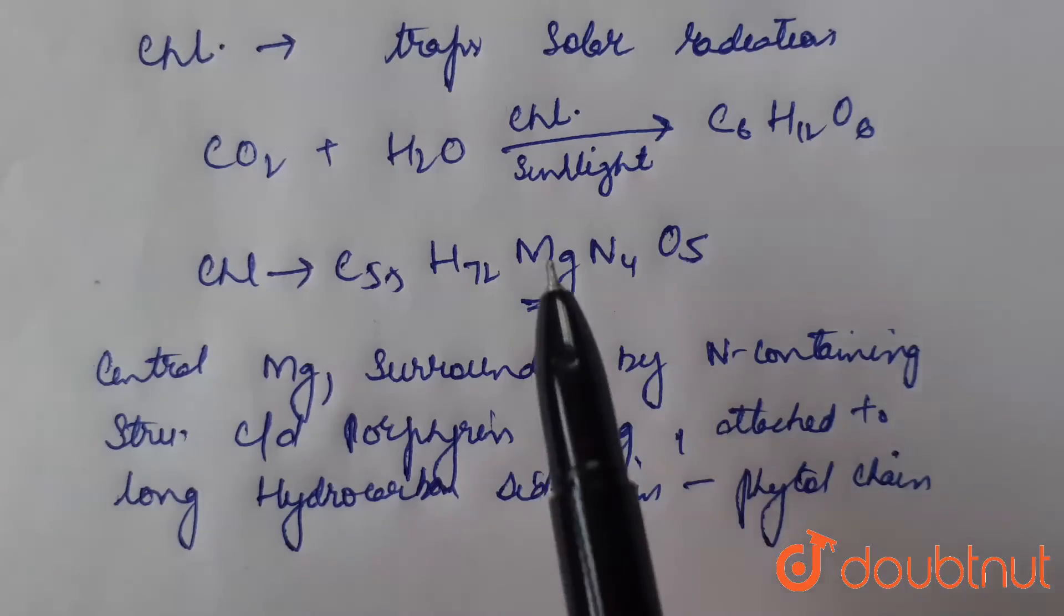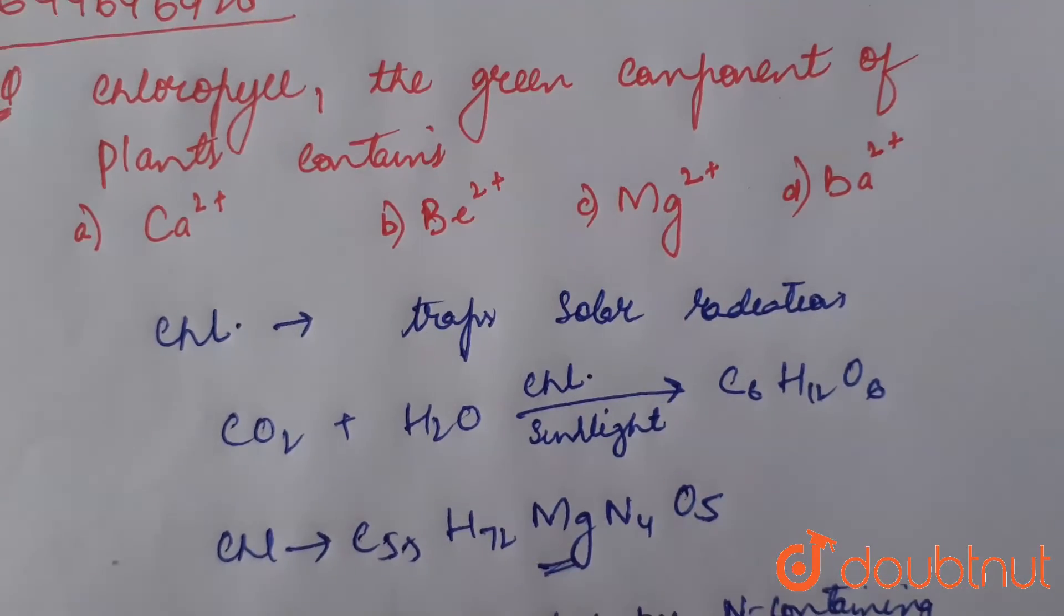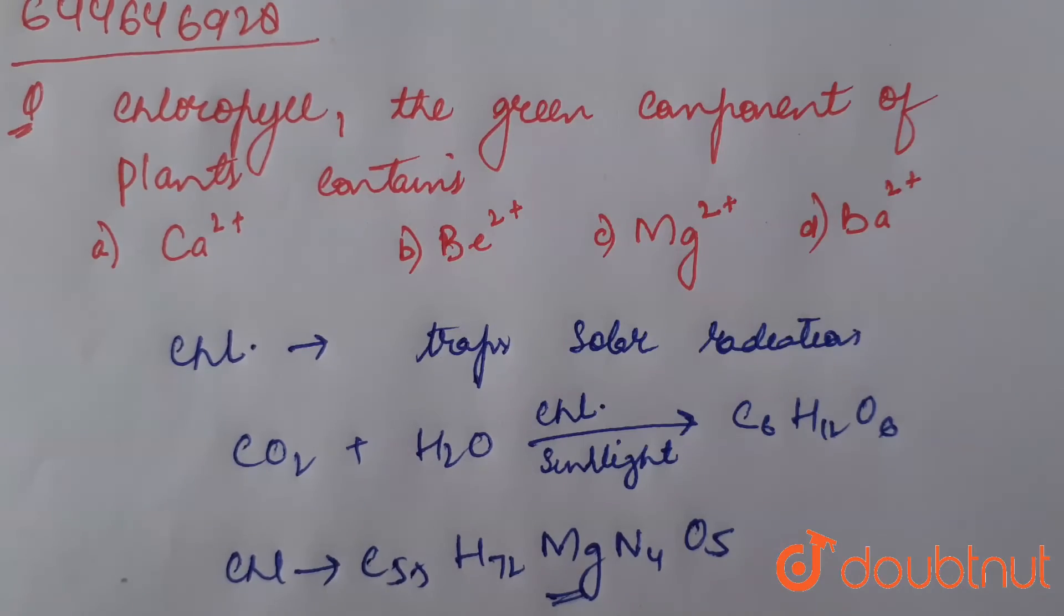And chlorophyll contains magnesium, thus the correct option for the given question is chlorophyll, the green component of plants, contains option (c) Mg2+.